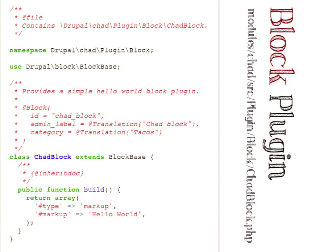So this is the 'hello world' of writing a plugin for Drupal 8. It's a single class inside a file located in a known namespaced directory. We're creating a block plugin, placing the code using the PSR4 standard into a file named ChadBlock.php inside our module. We've got the namespace, which includes the Plugin\Block subnamespace — I know that's what it's supposed to be because I'm implementing a block plugin type. And then we have the doc block, which provides our annotation.